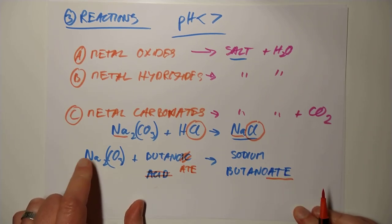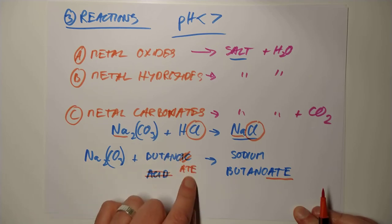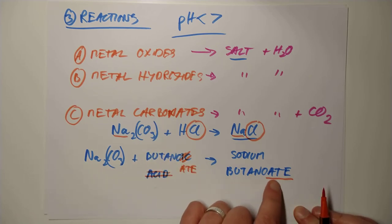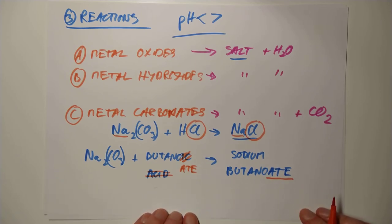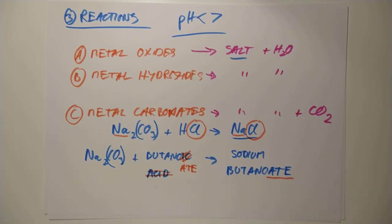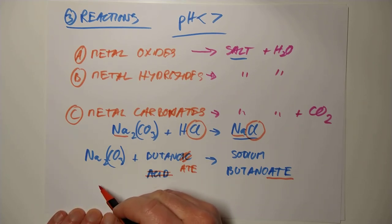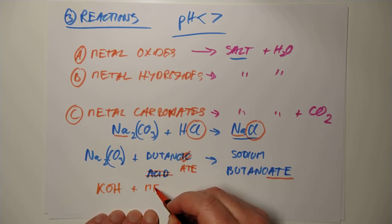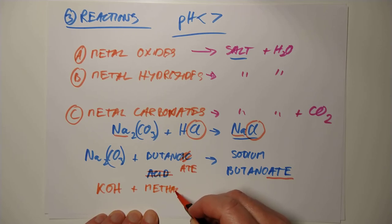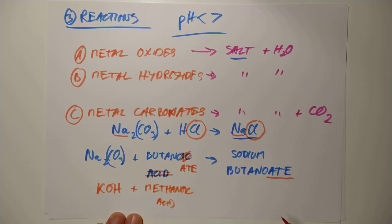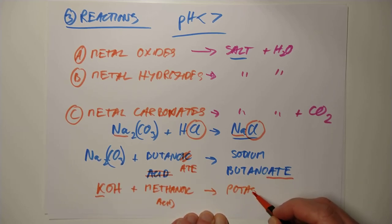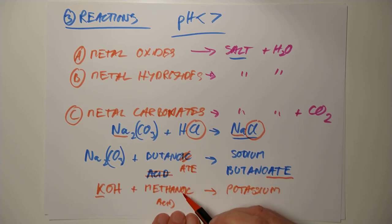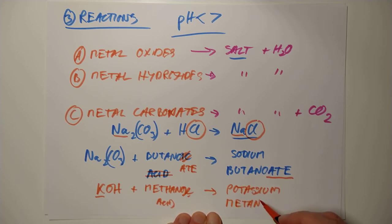You take the metal ion from the base, you take the acid name, chop off the '-ic', and add '-ate'. One more example: if we had potassium hydroxide and methanoic acid, you would make the salt potassium methanoate.